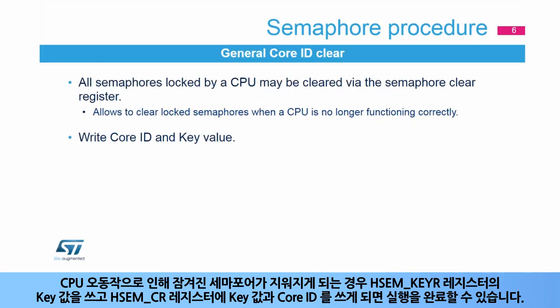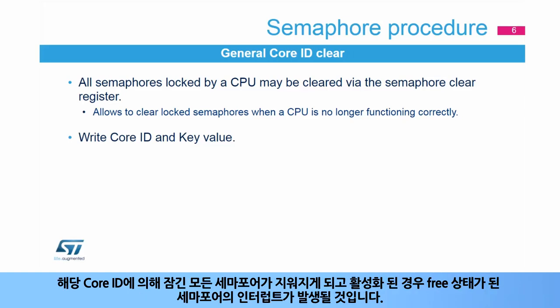In the case where locked semaphores from a malfunctioning CPU are to be cleared, this can be done by writing a key value in the HSEM_KEYR register and writing the key value and the core ID in the HSEM_CR register. It will clear all semaphores locked by the corresponding core ID. A semaphore get-free interrupt will be generated when enabled.